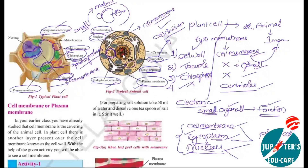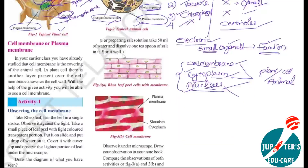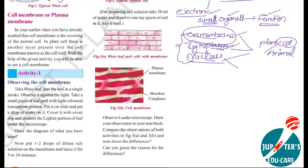So we have an activity to observe the cell membrane. We have already discussed plant cell and animal cell, and that every cell contains cell membrane, cytoplasm, and nucleus. Now let us study about the cell membrane, also called the plasma membrane.